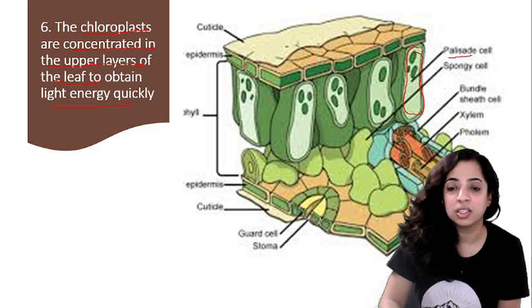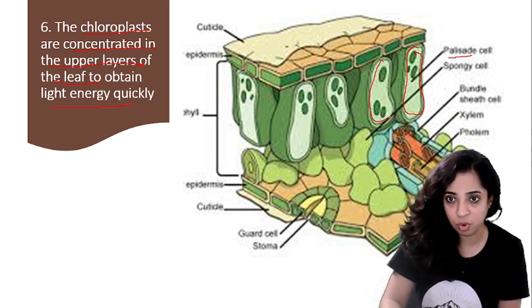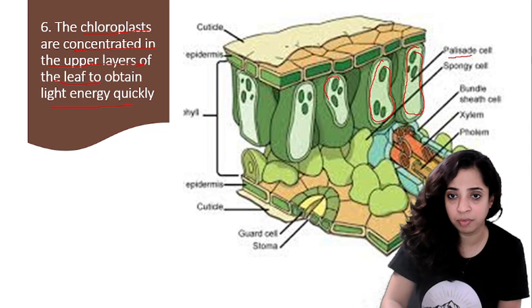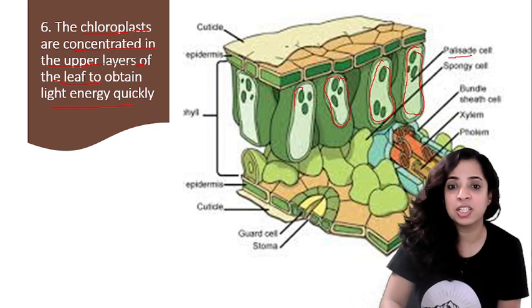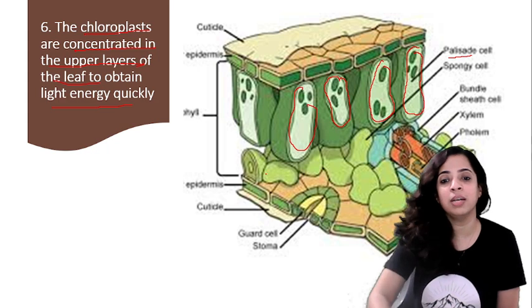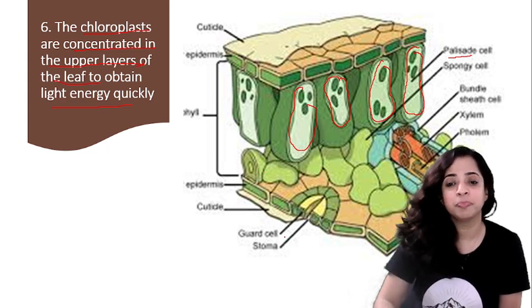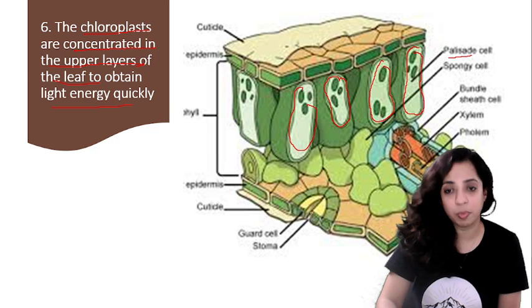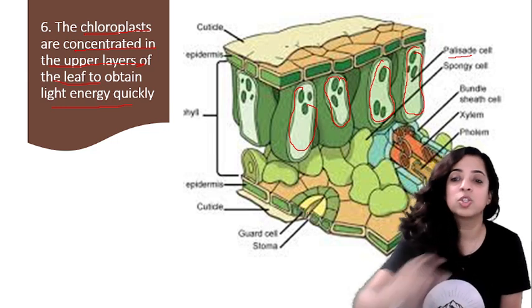Here maximum chloroplasts and photosynthesis takes place. So these are present in the upper layers of the leaf and very less photosynthesis happens in the stomata or in the below levels. So they are all at the upper layers of the leaf so that they can obtain energy very quickly.